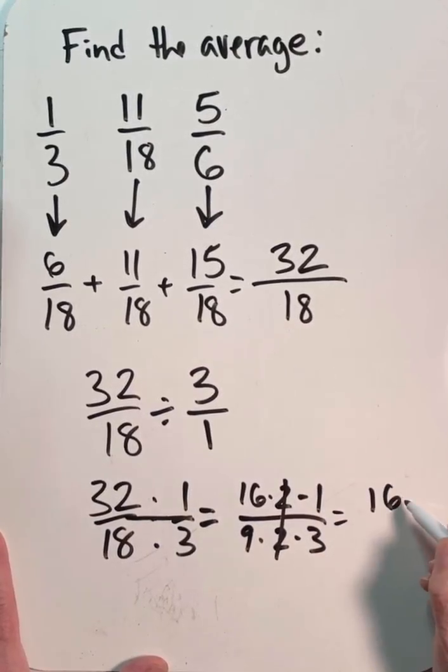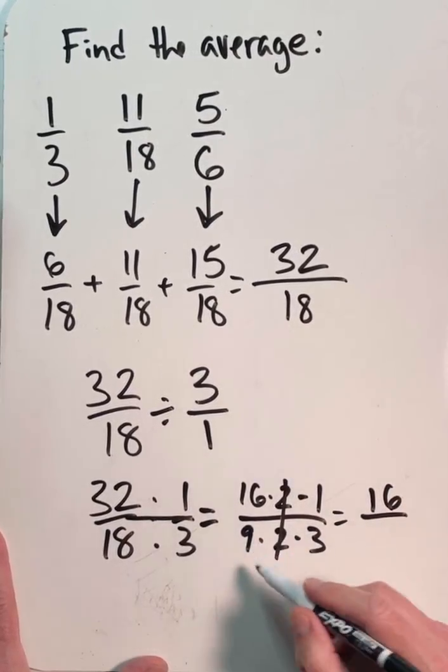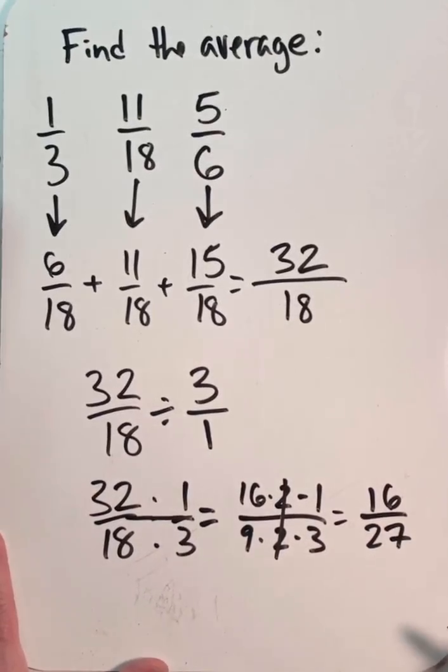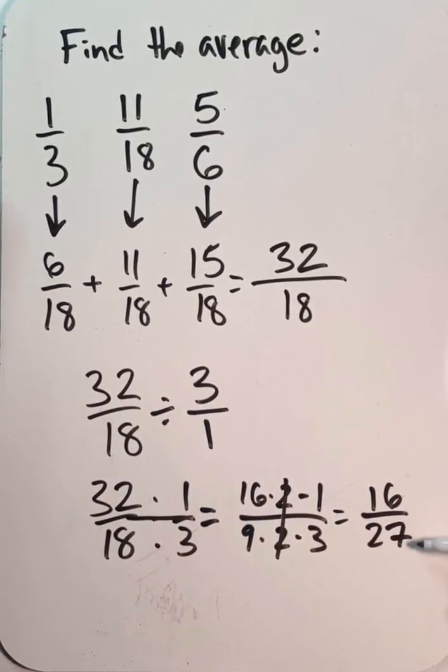And that would leave me with 16 times 1, or 16, divided by 9 times 3, or 27. Since 16 and 27 do not share any common factors, I know that this is my final answer.